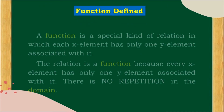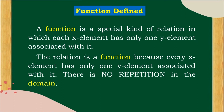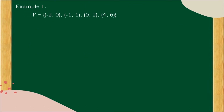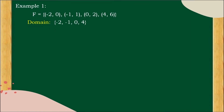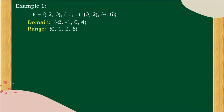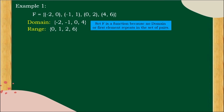Function defined: A function is a special kind of relation in which each x element has only one y element associated with it. The relation is a function because every x element has only one y element associated with it — there is no repetition in the domain. Example: Set f has the pairs (negative 2, 0), (negative 1, 1), (0, 2), and (4, 6). The domain is: negative 2, negative 1, 0, and 4. The range is: 0, 1, 2, and 6. Set f is a function because no domain or first element repeats in the set of pairs.